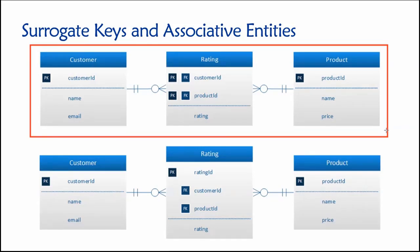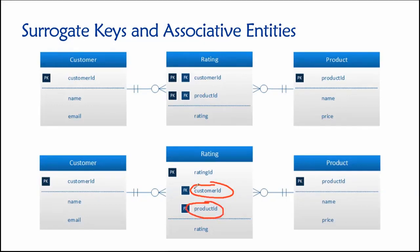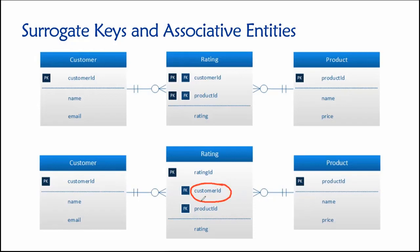We have an alternate design using a surrogate primary key in our associative entity. In this design, we have a rating ID as a surrogate primary key, and then customer ID and product ID are no longer part of the primary key — instead, they're just regular foreign key links back to their respective parent tables. In this kind of design, a specific combination of customer ID and product ID could appear in our rating table many, many times. Each time, there would be a different rating ID, because that's the primary key.